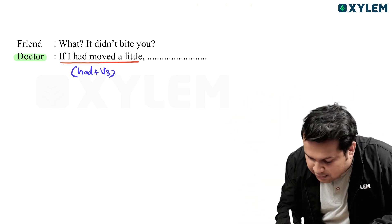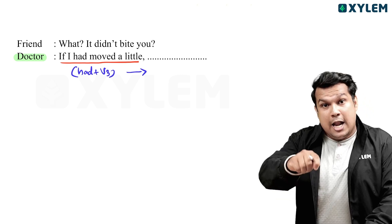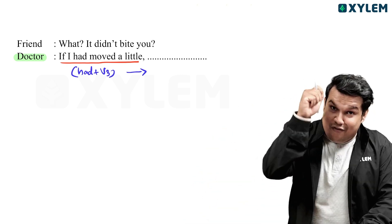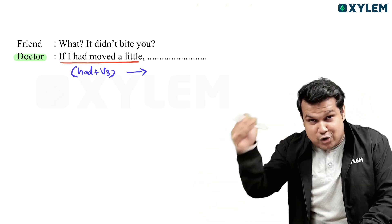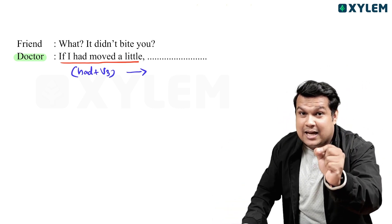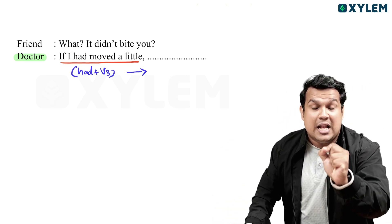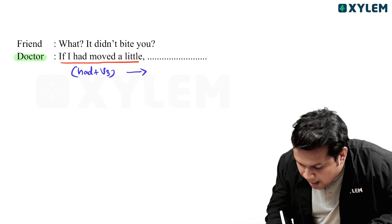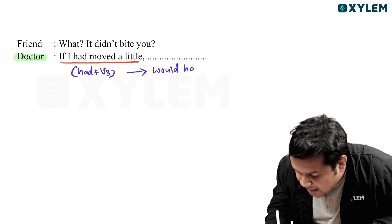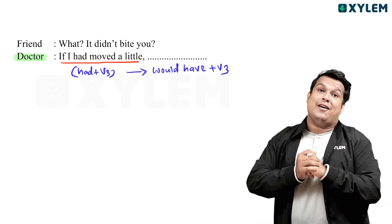For if-clauses: in the if-clause use had plus V3. In the main clause, use would plus V1 for type 2. For the third conditional, in the main clause you use would have plus V3.